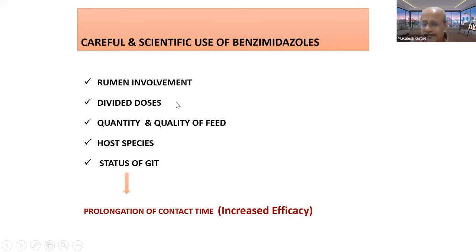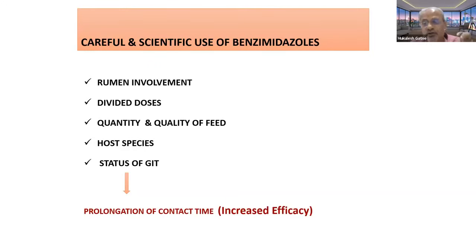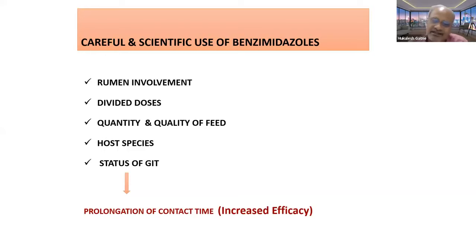Regarding the quantity and quality of feed along with anthelmintics: if you fast the animal before giving anthelmintic, the suspension, powder, or granules will travel down the digestive tract very slowly, prolonging contact time and increasing efficacy. The anthelmintic should be given with roughages rather than greens, which have more water content and travel faster. When digestive transit time increases, contact time increases, and when contact time increases, efficacy also increases.